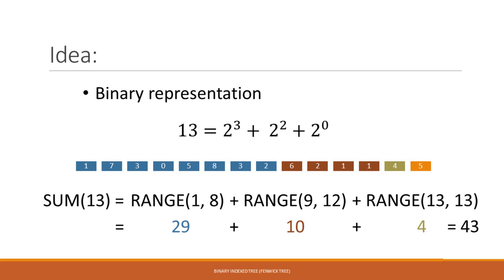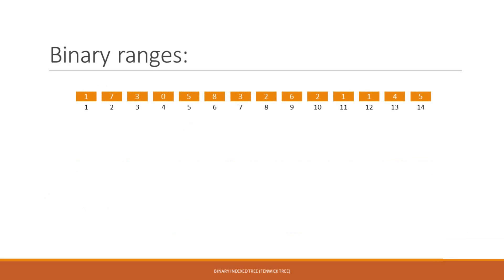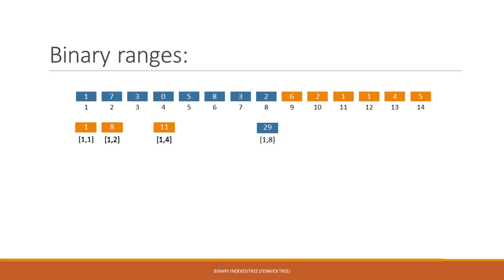What ranges do we need to pre-compute so that we can use the binary representation? Let's see an example. I have an array with 14 elements, and now we divide it into binary ranges. The first binary range is of length 1, from 1 to 1. The next is of length 2, from 1 to 2. The next is from 1 to 4, which is of length 4. The next is from 1 to 8, which is length 8. The next binary range would be from 1 to 16 of length 16, but this is bigger than our array itself, so we don't use it.